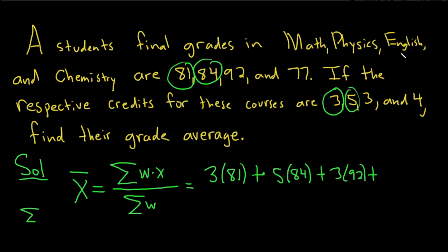And then the last one would be chemistry. There it is over here. Chemistry. And that's 4. So 4 times 77. You basically just take each weight and multiply it by the grade. Add them up.